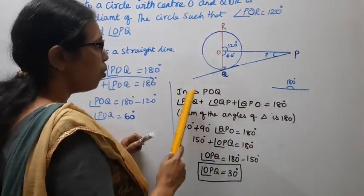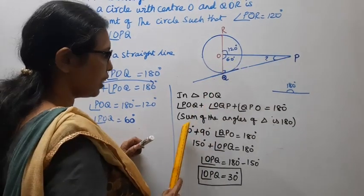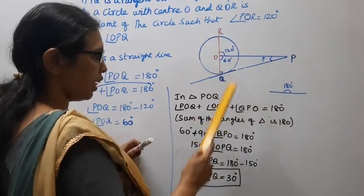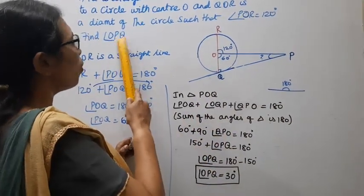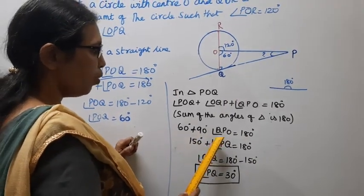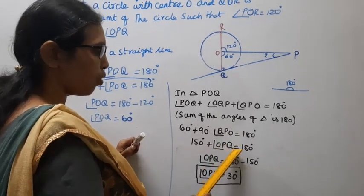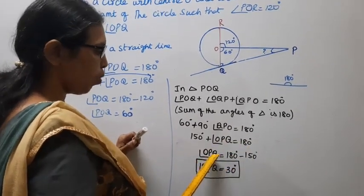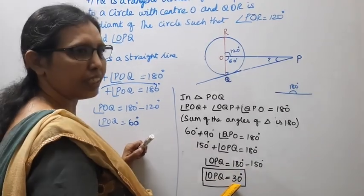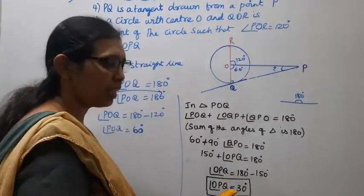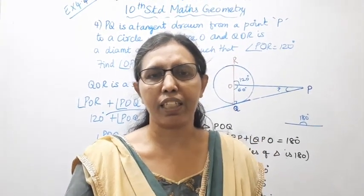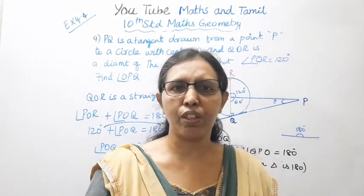POQ is 60 degrees, OQP is 90 degrees, so QPO — that is, angle OPQ — equals 180 minus 60 plus 90, giving 30 degrees. OPQ is 30 degrees. Subscribe to the videos and click the bell button.